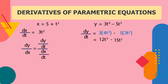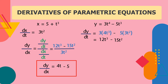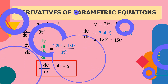Now let's find the derivative of the function: dy/dt divided by dx/dt. That is (12t³ − 15t²) divided by 3t². Simplifying: 12t³ divided by 3t² equals 4t, and 15t² divided by 3t² equals 5. So the first derivative is 4t − 5.